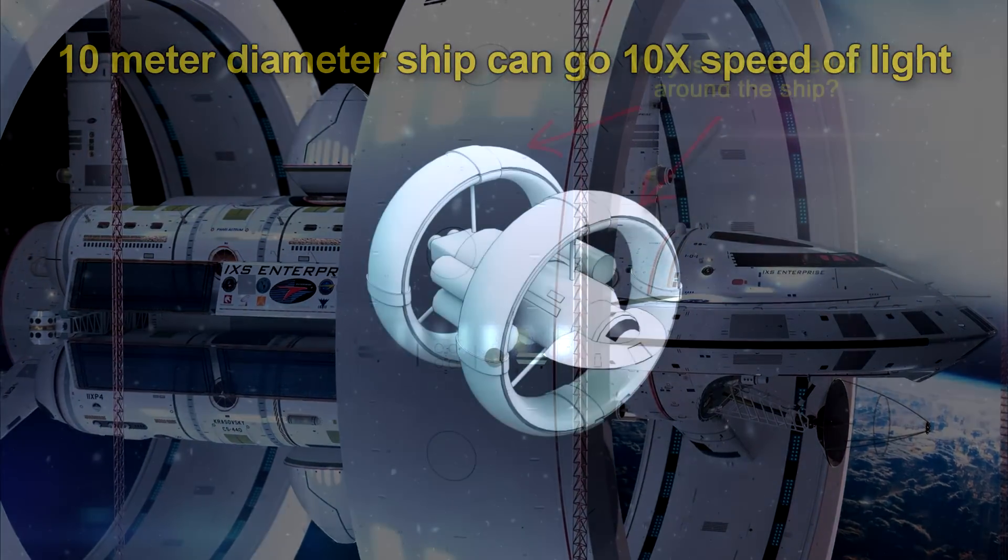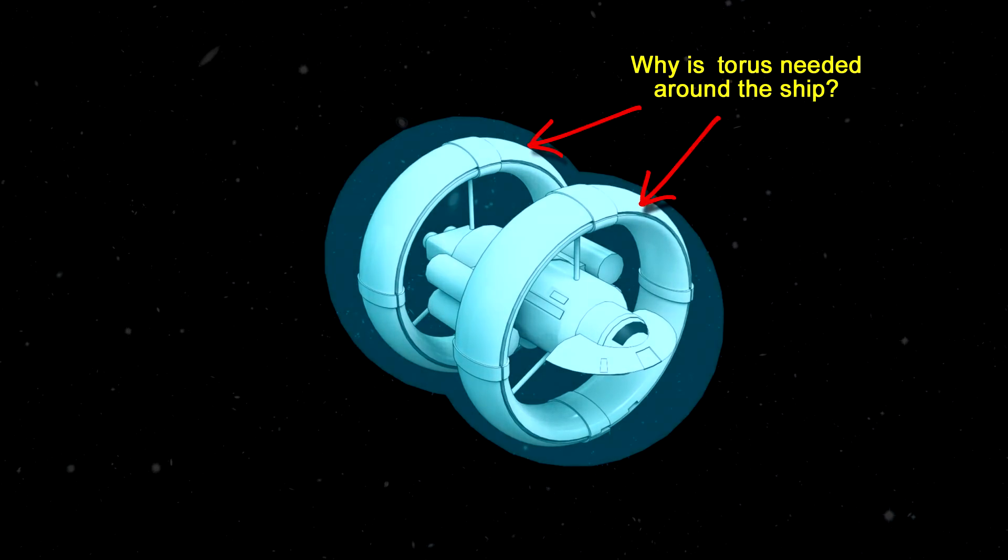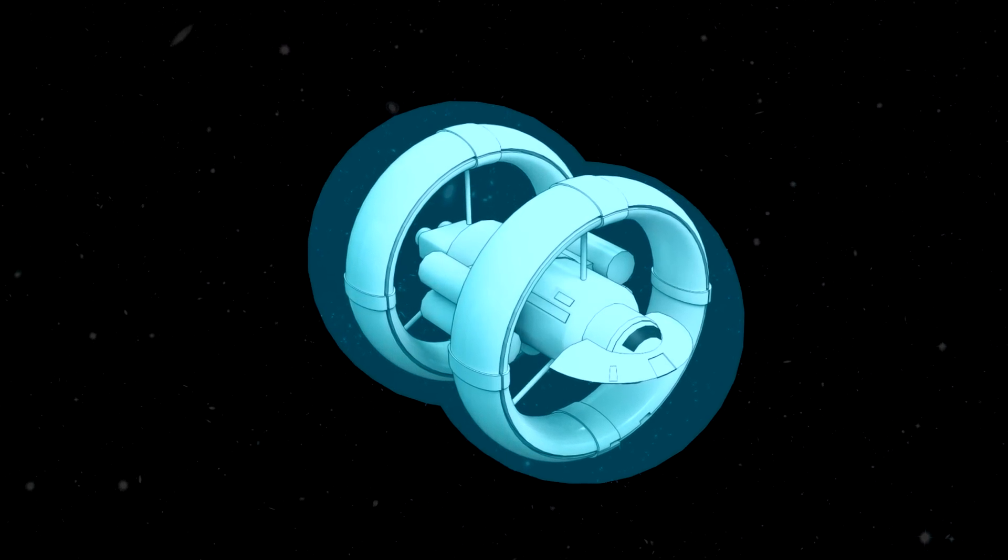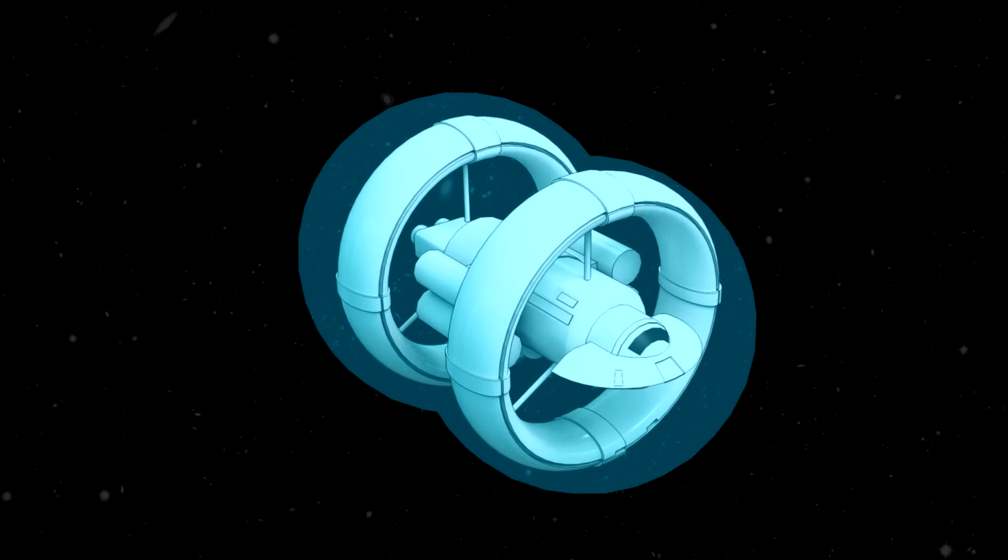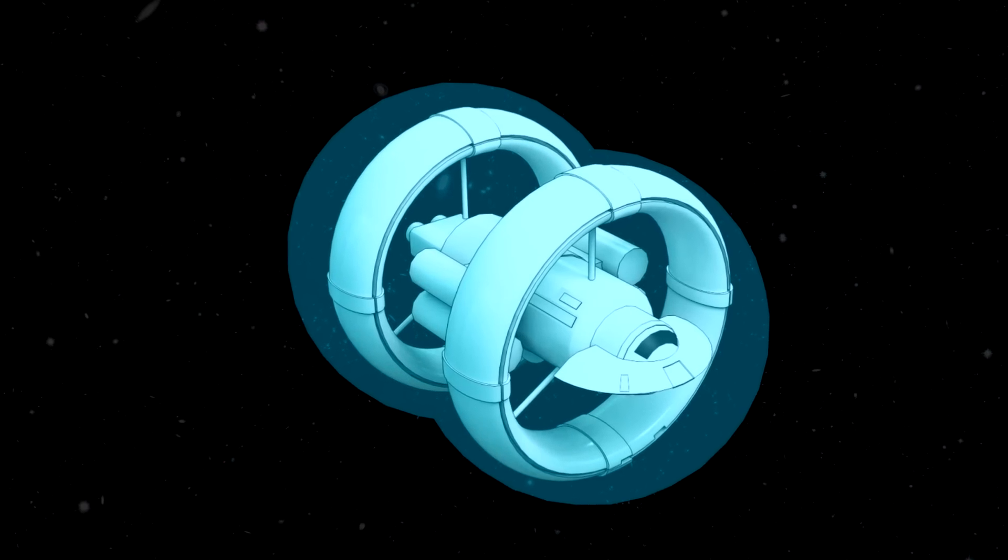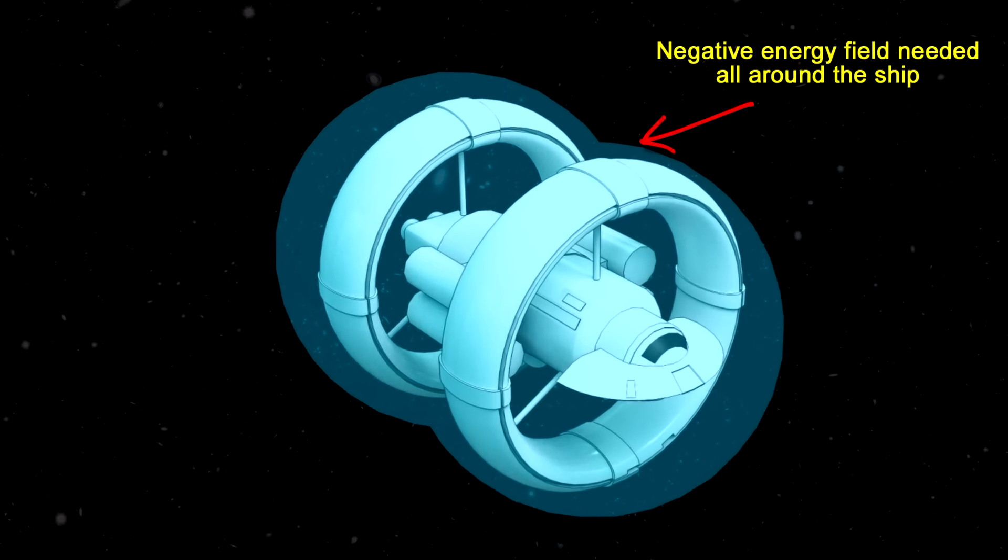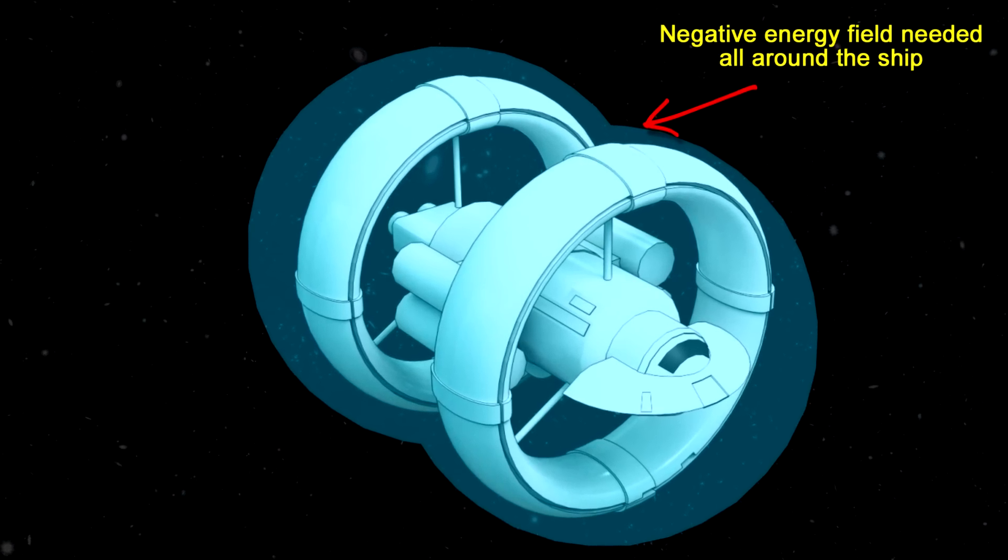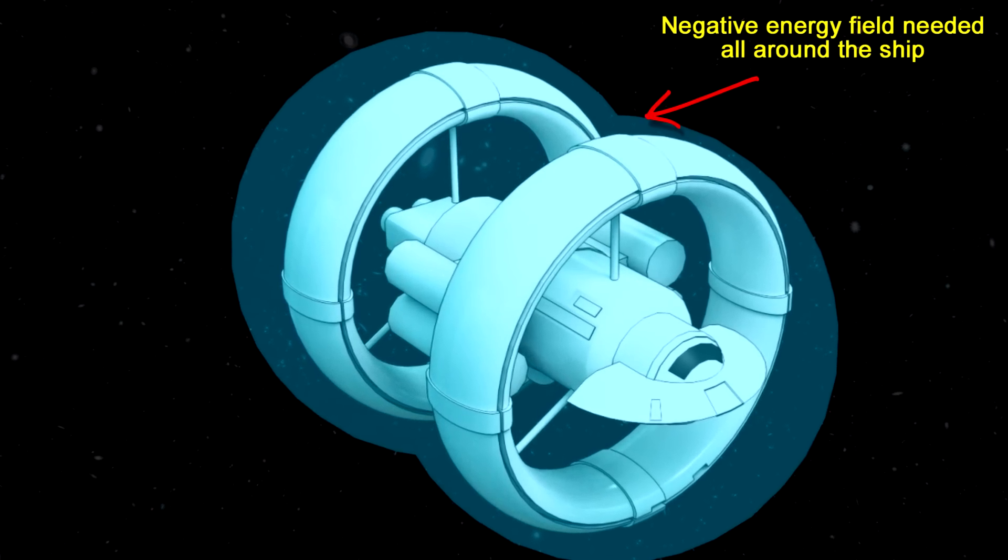Now you might say, why is there a torus around the ship? The torus is what would create the negative energy field around the ship. You would think that since space is expanding in the back, you need the negative energy directed at the back of the ship. But if you do the math, what you find is that the negative energy is needed all around the ship. That's why the ring in the concept renderings is around the spaceship itself.